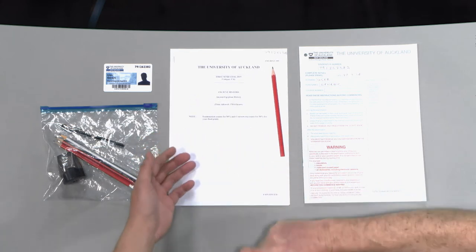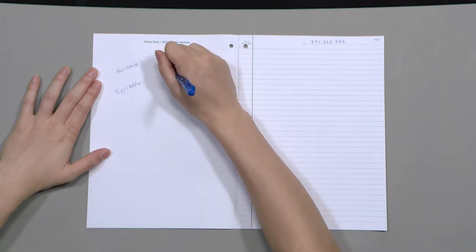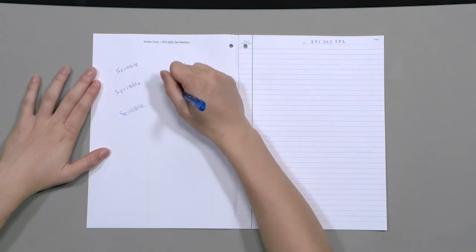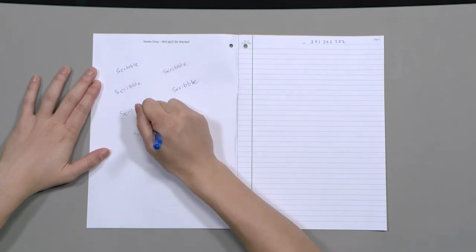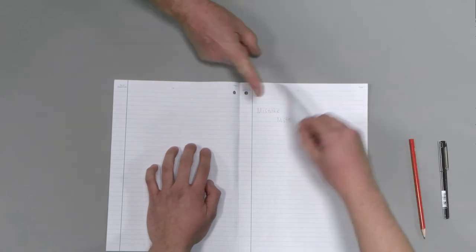No scribbling paper should be brought in. For any rough work, you may use the inside of the front cover or the back of the script book. Any work that you do not wish to be marked should be crossed out. Do not remove pages from your script book.